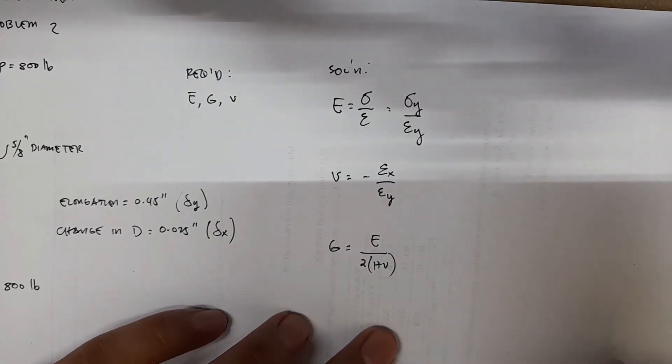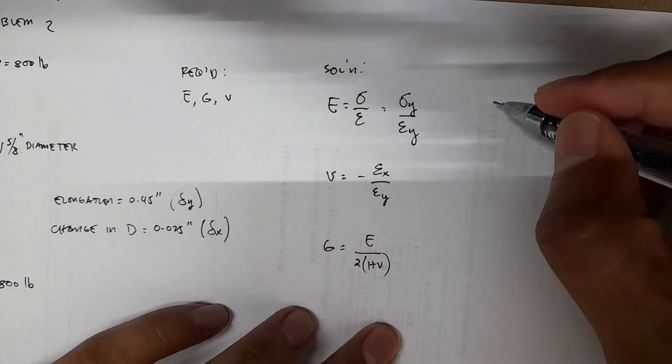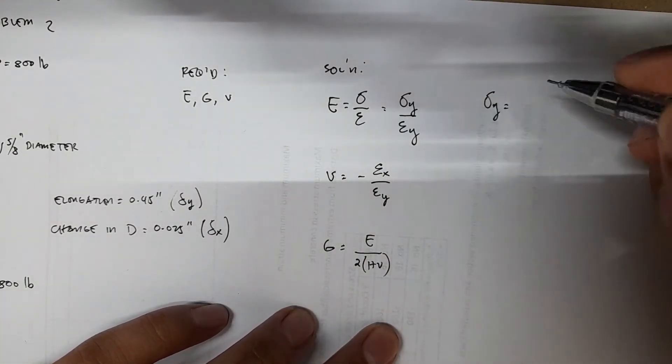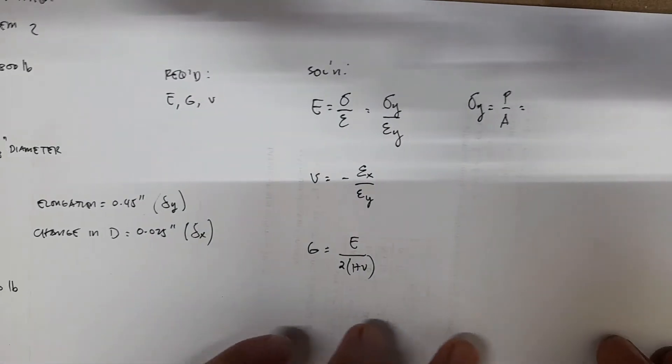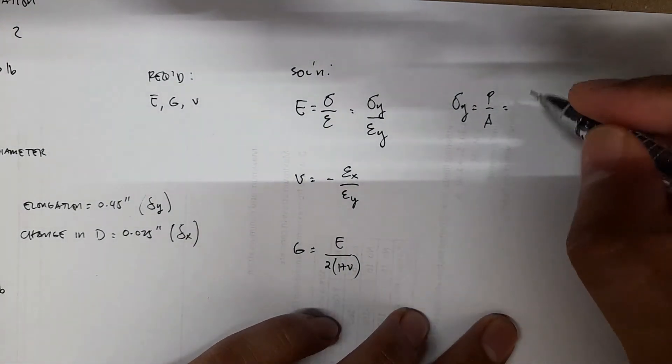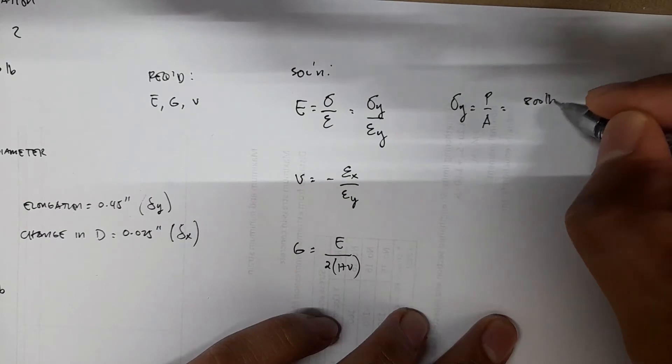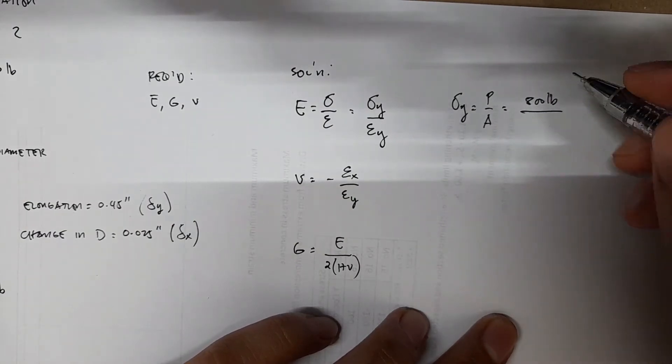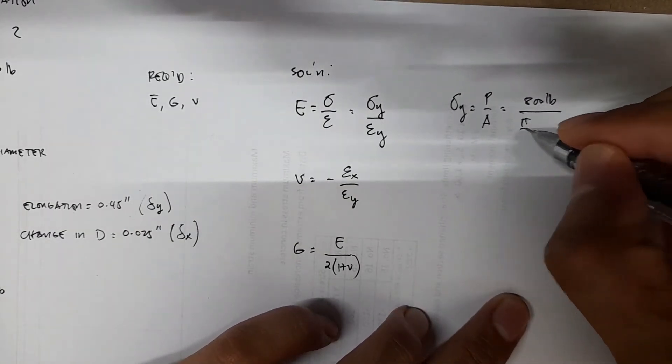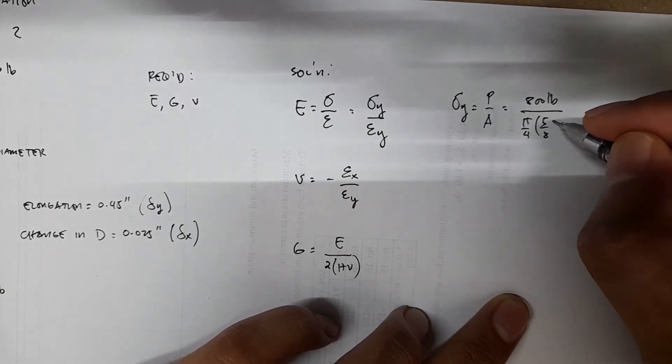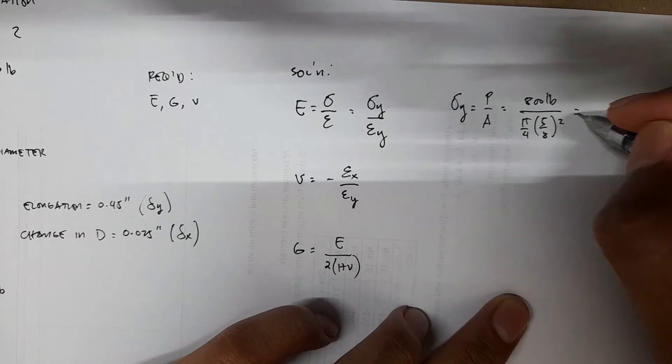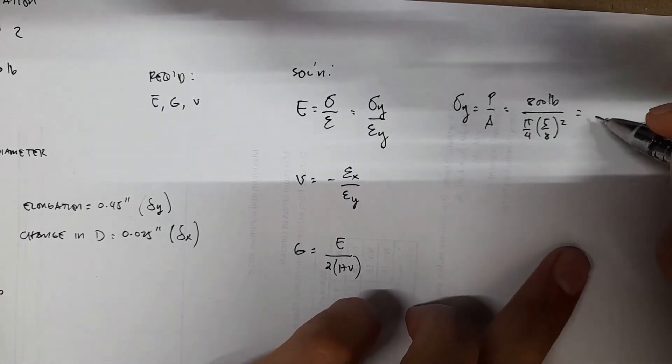First we find stress y. Stress y is P over A, which is 800 pounds. Your area is pi over 4 times d squared, or five-eighths inch squared. So we have stress y equals 2.6076 times 10 to the 3 psi.